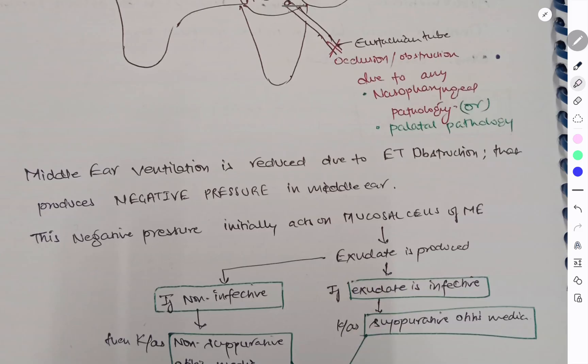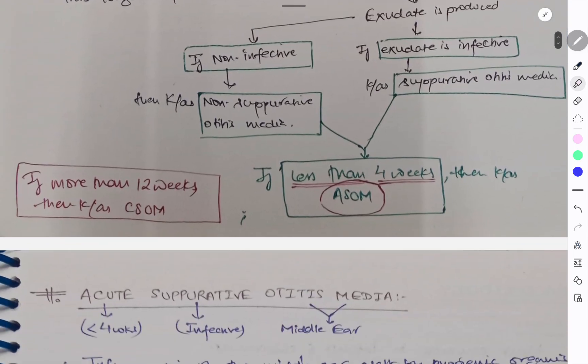And if exudate is non-infective, it is called non-suppurative otitis media. Depending upon the duration, if it is less than four weeks, it is called ASOM. And if it is more than twelve weeks, it is called CSOM.